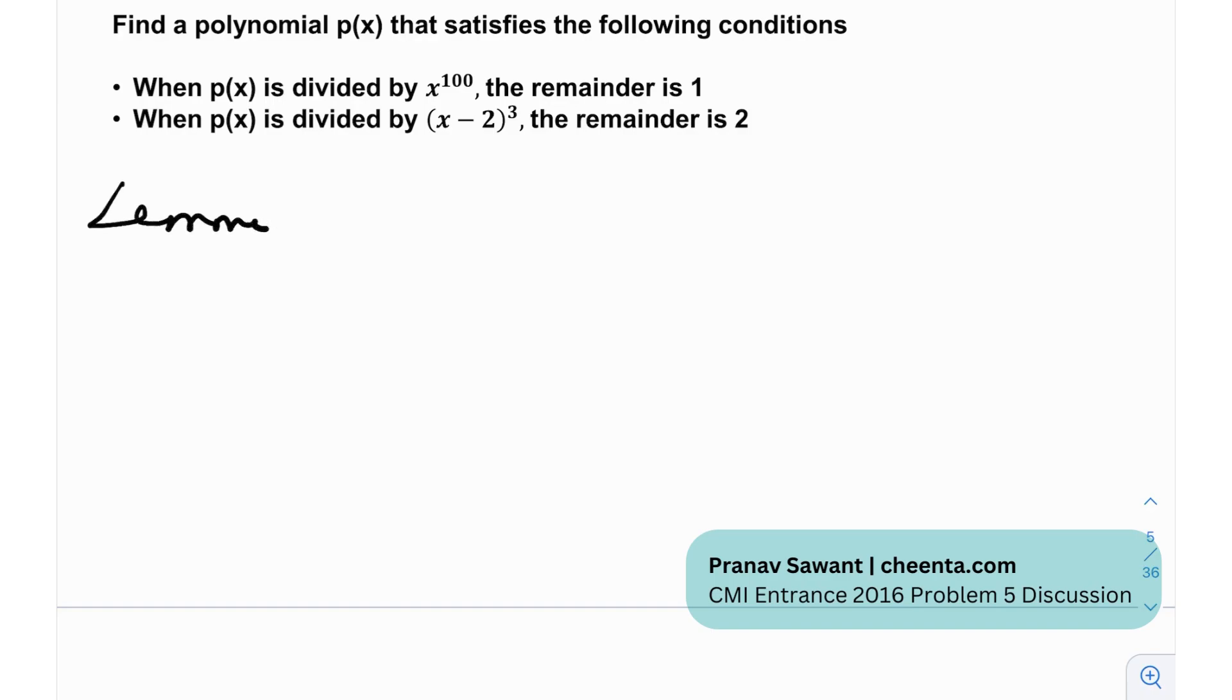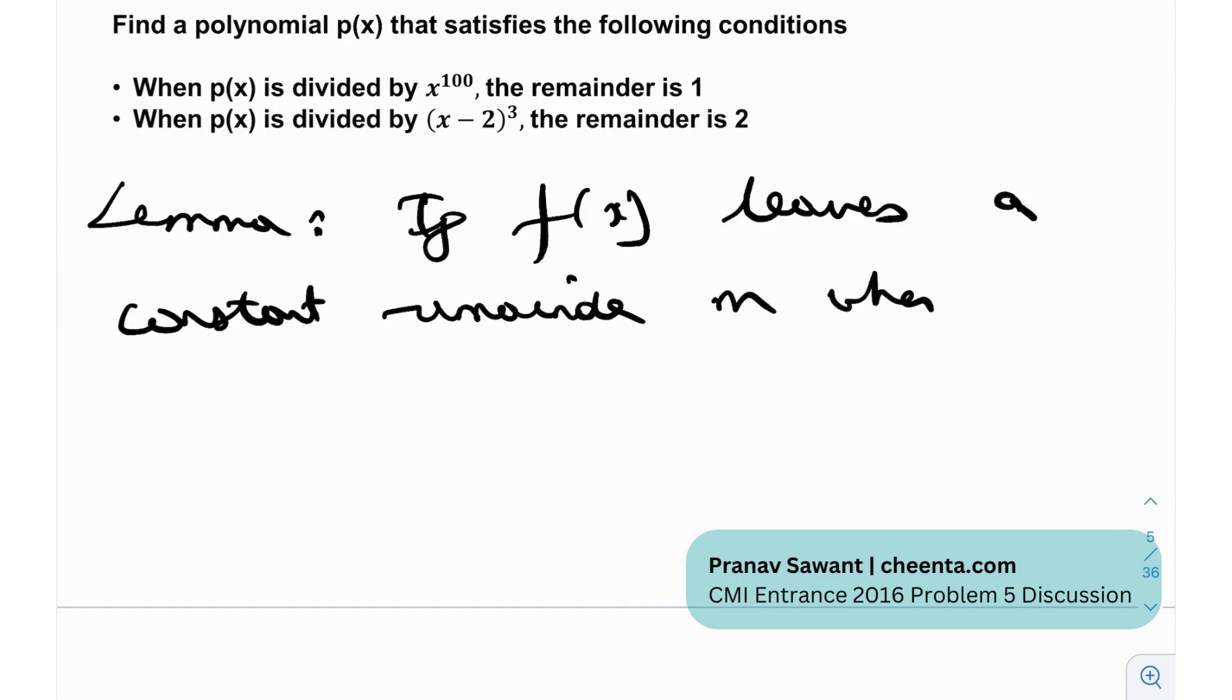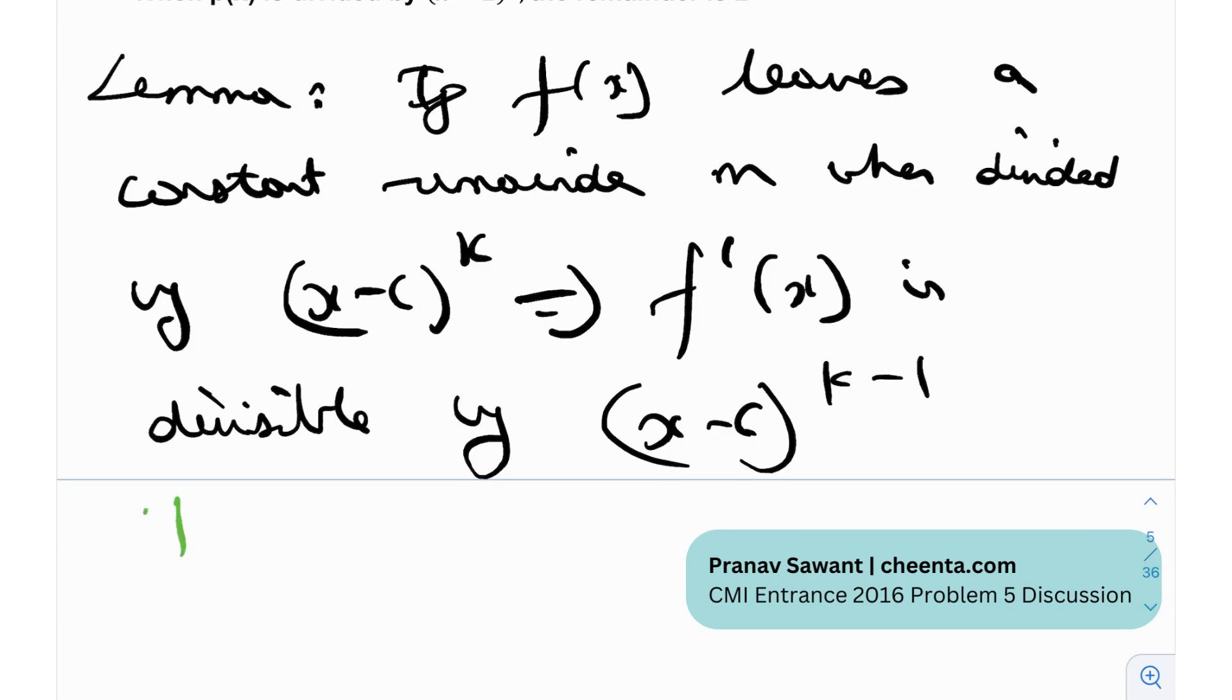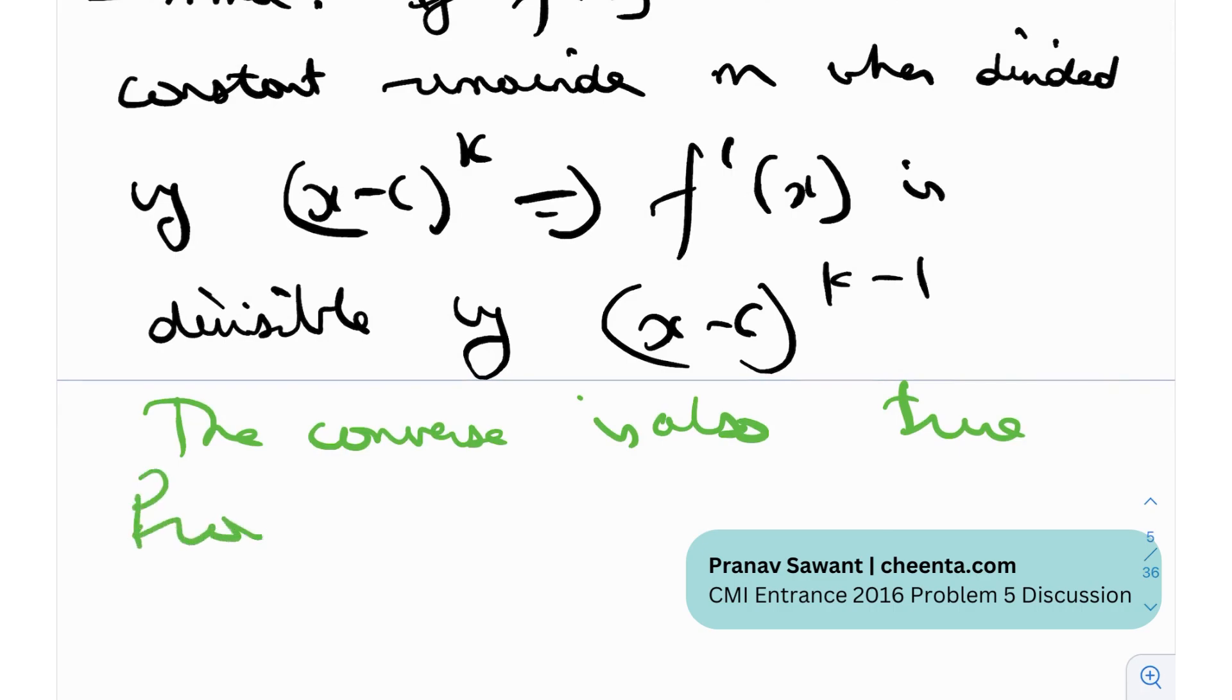Now I'm gonna write a lemma so my lemma is that if f of x leaves a constant remainder m when divided by (x minus c) raised to the power k then that implies that f prime of x is divisible by (x minus c) raised to the power k minus 1 and actually an interesting thing is that the converse is also true okay so the converse is also true and so this is the kind of like the result of the theorem that I was talking to you about and let me just prove this in brief.